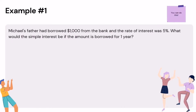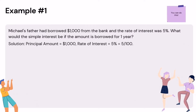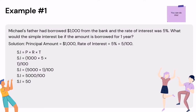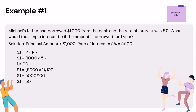Example 1: Michael's father had borrowed $1,000 from the bank at a rate of interest of 5%. What would the simple interest be if the amount is borrowed for one year? Given: principal is $1,000, rate is 5% (or 5/100), time is 1 year. Using the formula SI = P × R × T: 1,000 × (5/100) × 1 = 5,000 ÷ 100 = $50. Therefore, the simple interest if the amount is borrowed for one year is $50.